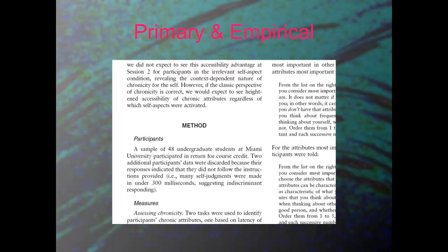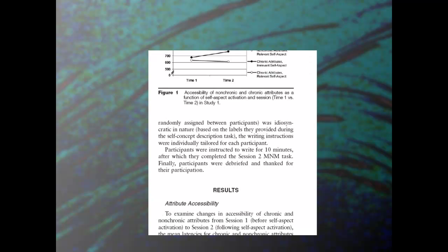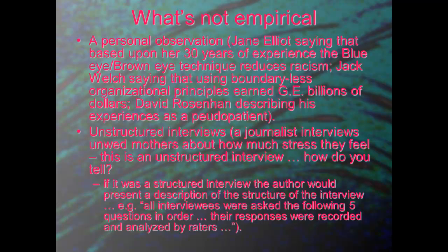The best way to discover if something is primary and empirical is to look at the actual paper itself — if you find a results section, it's basically a no-brainer: it is empirical. What's not empirical? Personal observations — when an author describes what they think about something or their own personal experiences — these are not systematic. Unstructured interviews are also not empirical: when a reporter interviews several people without a structured set of questions, that's not empirical.